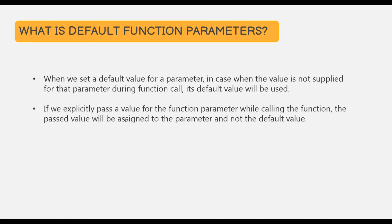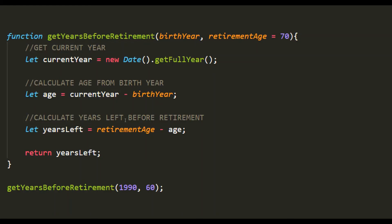If we explicitly pass a value for a function parameter while calling the function, the passed value will be assigned to the parameter and not the default value. Here, to getYearsBeforeRetirement, we have set a default value of 70 for retirementAge. But when we pass values for both parameters — 1990 for birthYear and 60 for retirementAge — retirementAge will use the passed value of 60, not the default value.